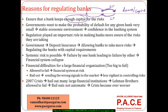The government wants the probability of default of the bank to be as low as possible. When a bank defaults, it impacts the entire financial system. People lose confidence in the banking system, which has a huge impact on the functioning of the economy. Governments typically want a stable economic environment, making sure the banking system is effective and efficient, and the bank's default rate is much, much lesser.